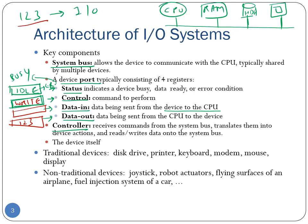Here are several examples of I/O devices. First, there are traditional I/O devices: hard disks, printers, keyboards, modems, mice, monitors, and touch screens. Then there are also non-traditional I/O devices that we don't encounter directly in daily life — such as joysticks, robot actuators, the flying surfaces of an airplane, or the fuel injection system of a car.